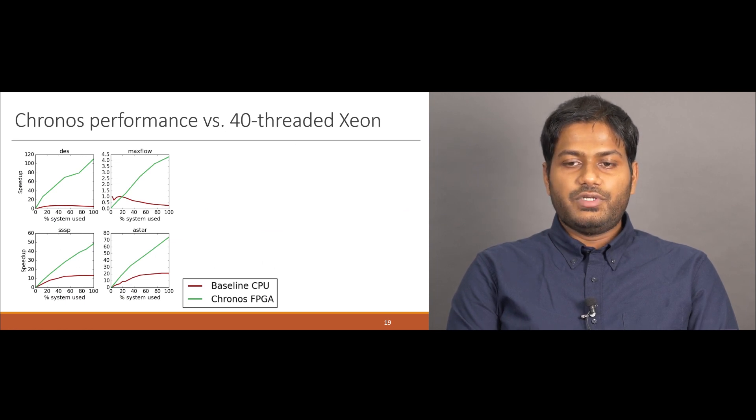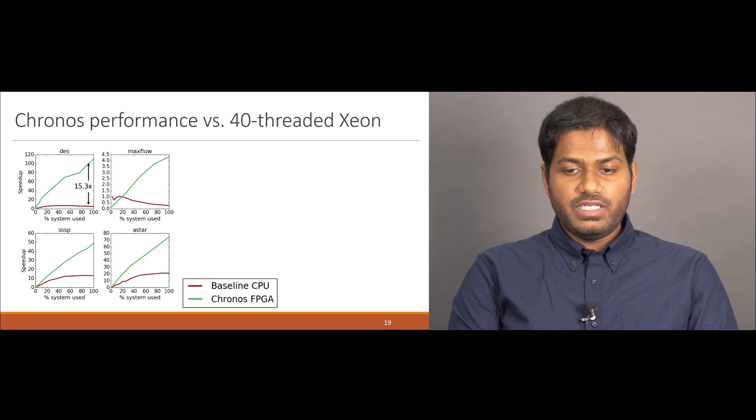First, let's look at the performance of Kronos, which shows how Kronos outperforms 40-threaded Xeon baselines significantly. To understand these graphs, we need to understand that this graph is comparing FPGA and CPU. Because different FPGA systems have different number of PEs and tiles, these graphs show the results as a percentage of system use. In each of these graphs, 1x is the performance of single-threaded CPU, and the red line at 100% corresponds to 40 threads. In the green line, we go from running a single concurrent task at a time to running as many tasks as can be fit on the FPGA. Compared to the CPU, the FPGA is 15.3 times faster for DES, 4.3 times for maxflow, 3.6 for SSSP, and 3.5 for A-star. In all these cases, the FPGA outperforms the CPU by running at a 19 times slower frequency.